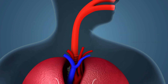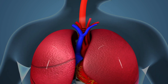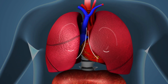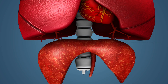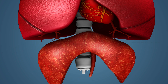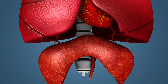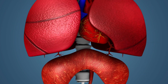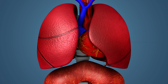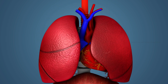Expiration is the process of expulsion of air from the lungs. In this process, the internal intercostal muscles contract and the diaphragm returns to its original dome shape. The space inside the thoracic cavity decreases, so the lungs are compressed and air is expelled out.